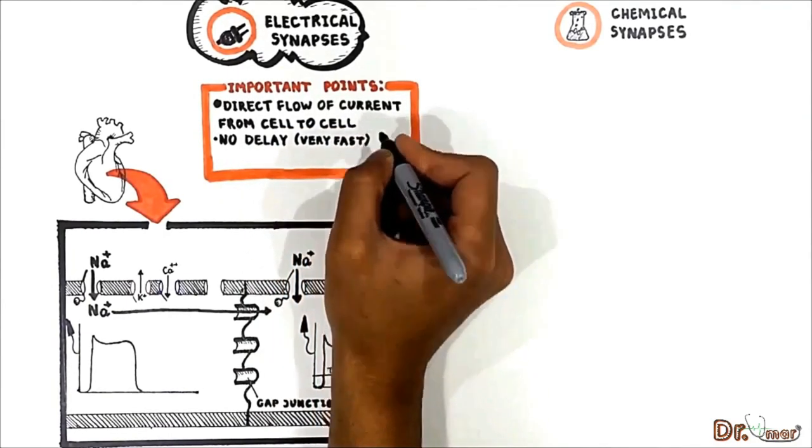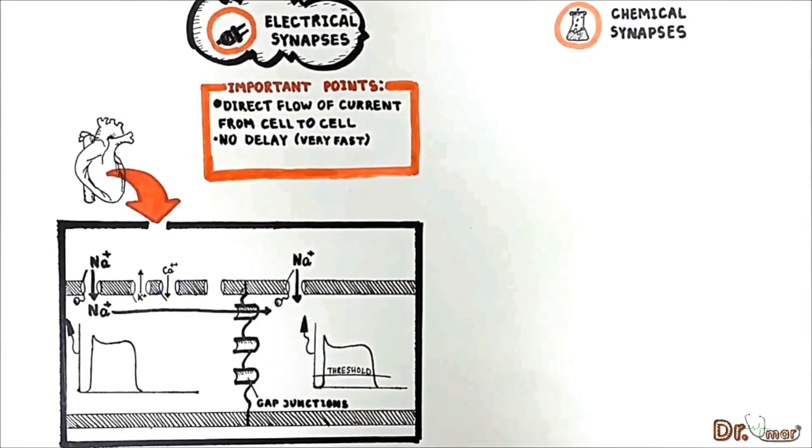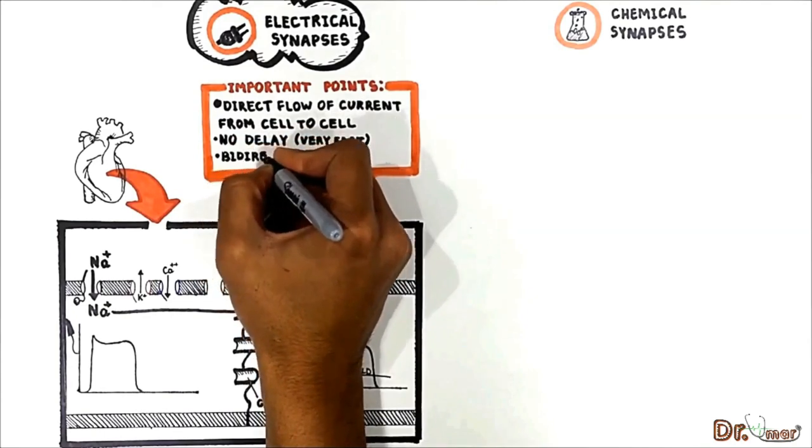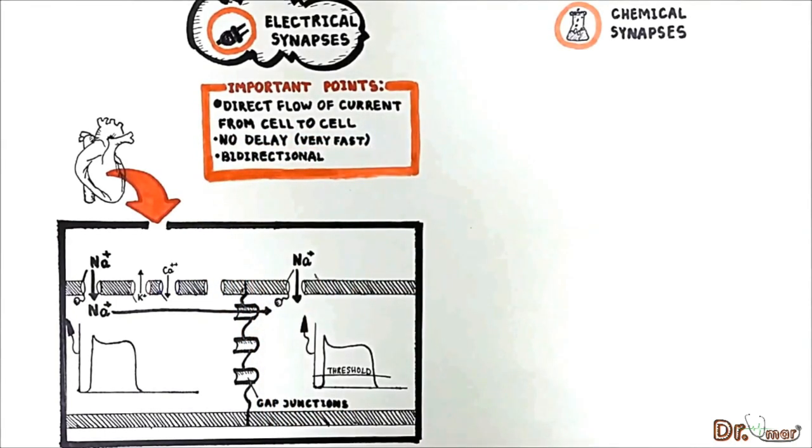Another important point here is that because the gap junctions are always open the electrical synapses are bidirectional. In other words they work in both directions.